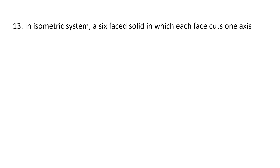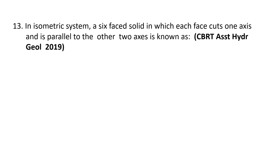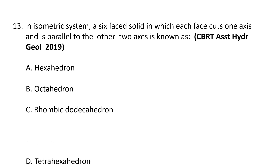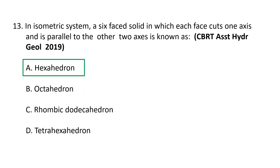Next question: in the isometric system, a six-faced solid in which each face cuts one axis and is parallel to the other two axes is known as: a) hexahedron, b) octahedron, c) rhombic dodecahedron, d) tetrahexahedron. The correct option is a) hexahedron. A hexahedron is any polyhedron with six faces — a cube, for example, is a regular hexahedron with all faces square and three squares around each vertex.